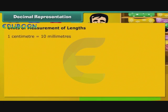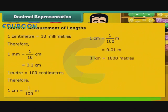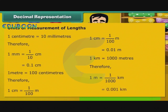1 cm is equal to 10 mm. Therefore, 1 mm is equal to 1 by 10 cm, that is 0.1 cm. 1 m is equal to 100 cm. Therefore, 1 cm is equal to 1 by 100 m, that is 0.01 m. 1 km is equal to 1000 m. Therefore, 1 m is equal to 1 by 1000 km, that is 0.001 km.